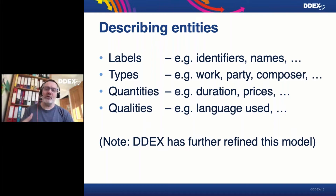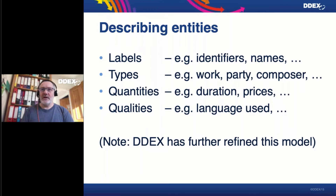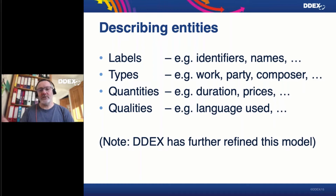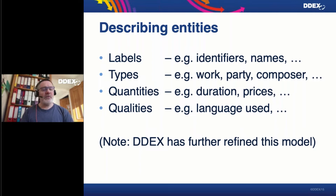Labels are names and identifiers. Types are how you classify an entity — is it a work or a party? If it's a party, is it a composer or a recording artist? Those are the kinds of things that computers actually need to work properly. Quantities include things like how long a sound recording is or what the price of a release is. And then you have qualities — things like the language used, whether it's a low-definition or high-definition video, whether we're talking about immersive sound or stereo or mono recording.